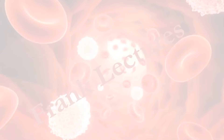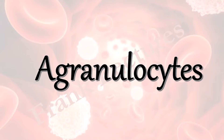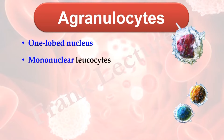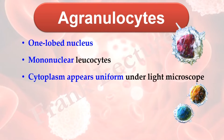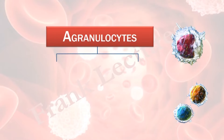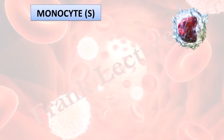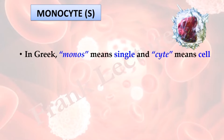In this video lecture we are going to study agranulocytes. Agranulocytes have one lobed nucleus; they are also known as mononuclear leukocytes. In the case of granulocytes, the nucleus is multi-lobed and they are known as polymorphonuclear leukocytes, but here since the nucleus is single-lobed they are known as mononuclear leukocytes. The cytoplasm of agranulocytes appears uniform under a light microscope since granules are invisible.